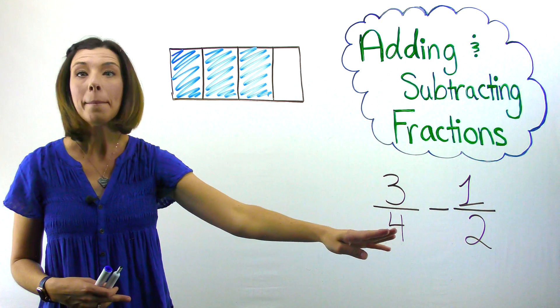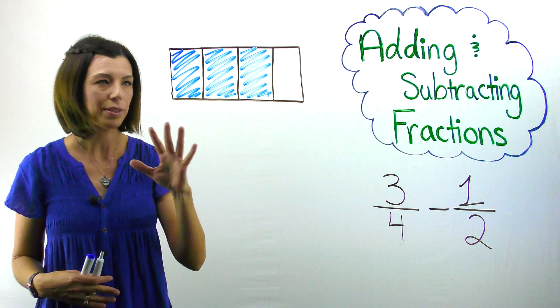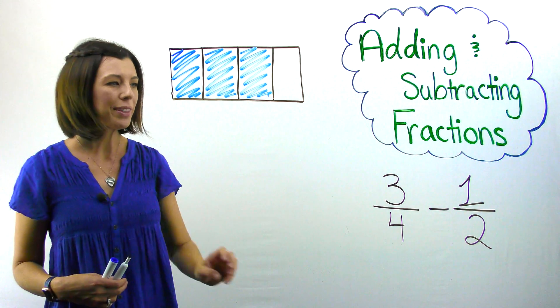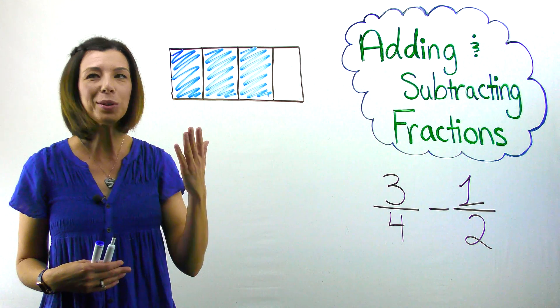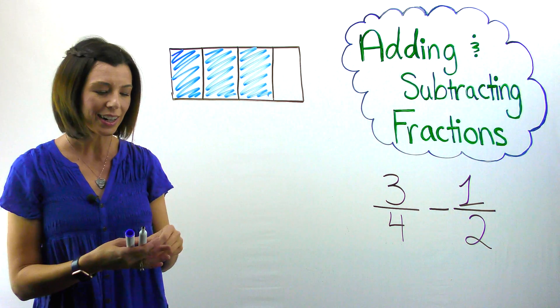This is my minuend. It's what I'm starting with. So I have three-fourths of something and I need to take away one-half. It's actually really easy to see when I'm looking at it here.